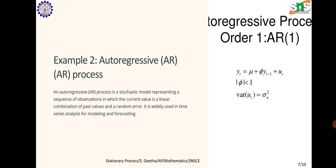Example 2: Autoregressive (AR) process. An autoregressive process is a stochastic model representing a sequence of observations in which the current value is a linear combination of past values and a random error. It is widely used in time series analysis for modeling and forecasting.